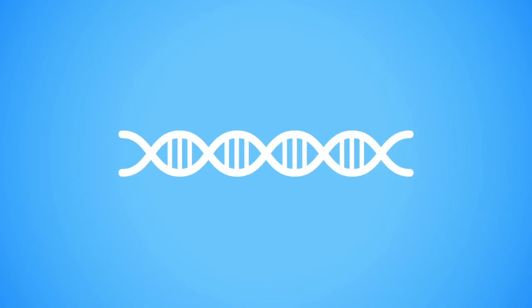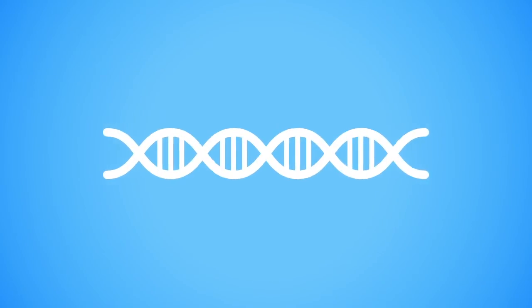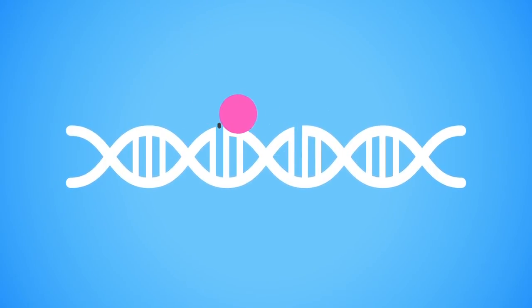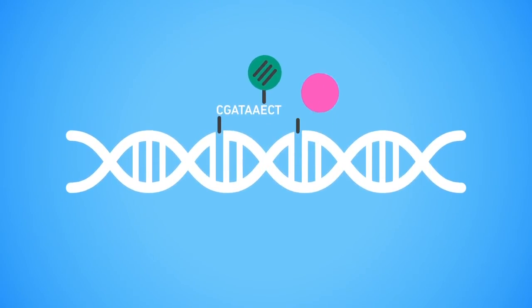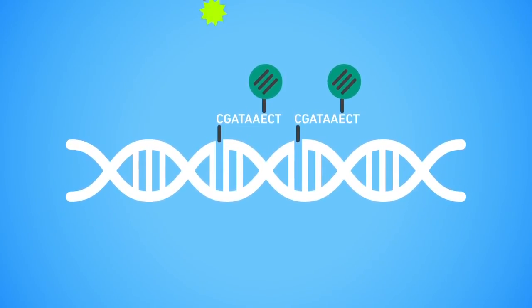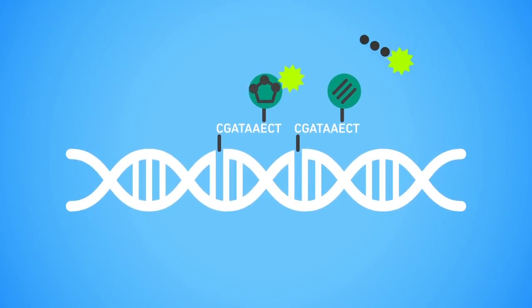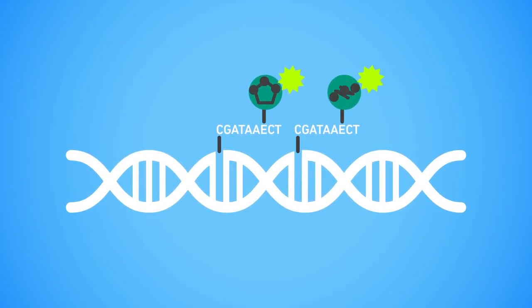The Click-iT Plus TUNEL assay differs from the traditional TUNEL assay, in that a smaller, more efficiently incorporated alkyne-labeled nucleotide is used. After incorporation, an azide-containing fluorescent dye is added, and after a short 30-minute Click-iT reaction, the alkyne and azide group are specifically joined.